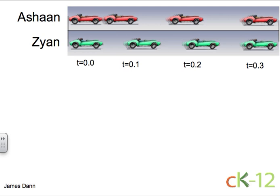Here we have two young racers, Ashaan in the red car and Zion in the green car. We also have a high speed camera that is taking a picture every tenth of a second, thus recording the position as a function of time.